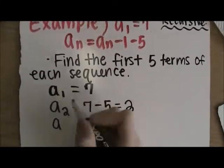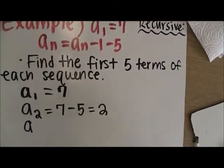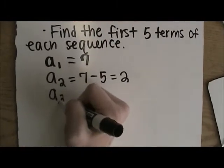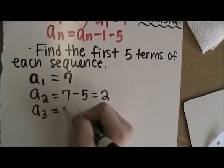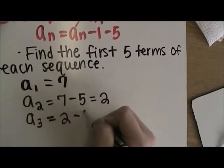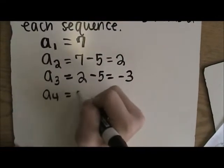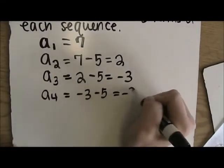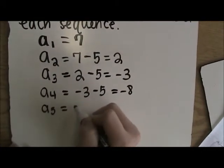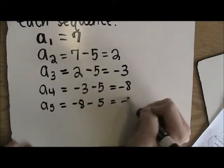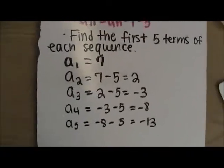Because a sub n minus 1, right here, is the previous term. To find a3, you do 2 minus 5, which is negative 3. a4, you do negative 3 minus 5, which is negative 8. And a5, you do negative 8 minus 5, which is negative 13. Now we have the first five terms of the sequence.